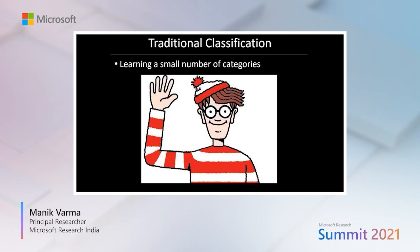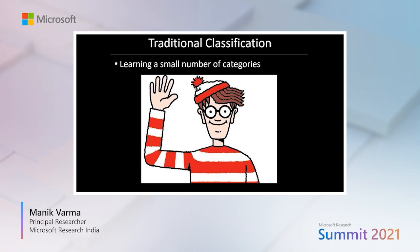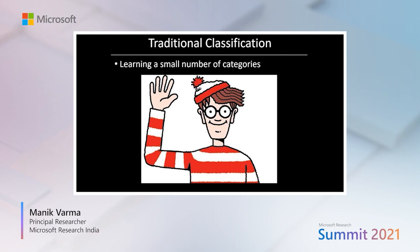In traditional classification, we take an input such as an image, a document, or an audio clip, and classify it into a small number of categories. For example, a couple of decades ago, image classifiers would categorize inputs into hundreds of visual categories, and if we had applied them to this popular Wally image, we might have gotten back a few categories such as person, young, hand, non-photo, etc.